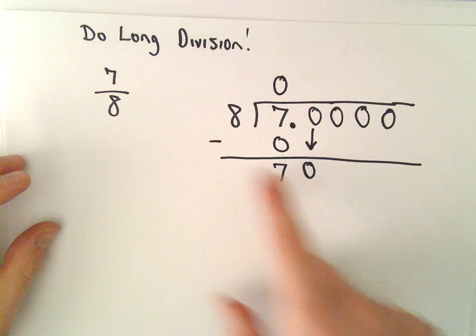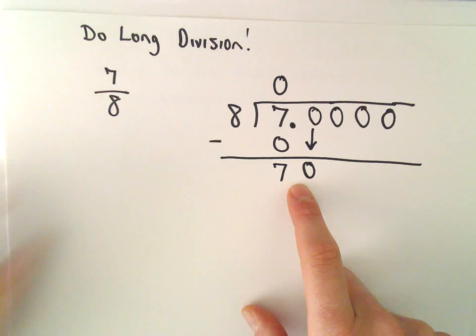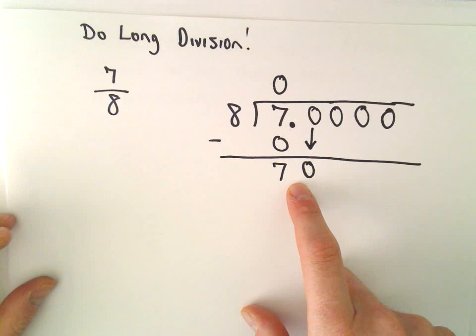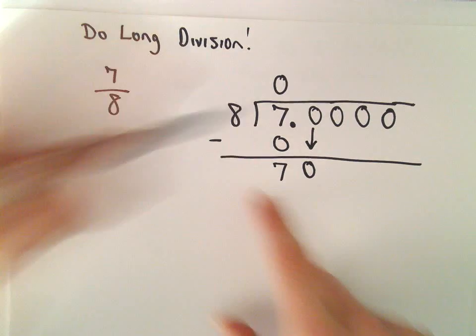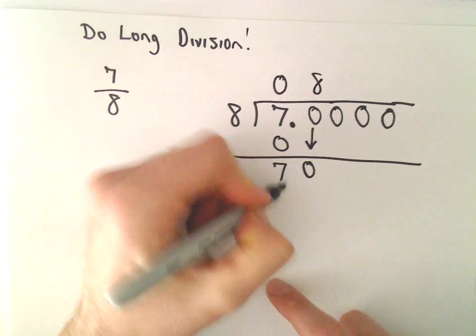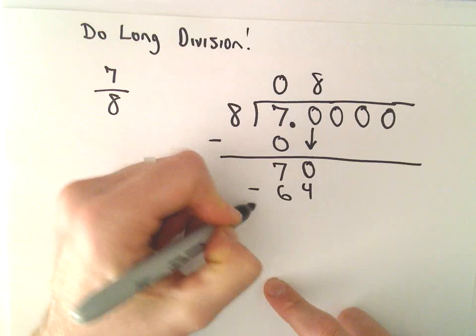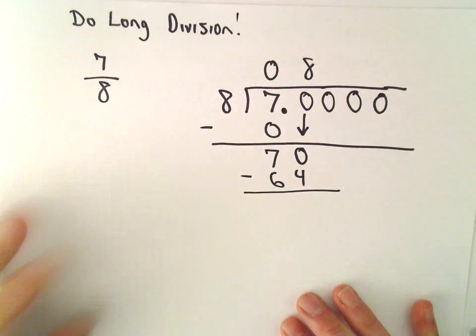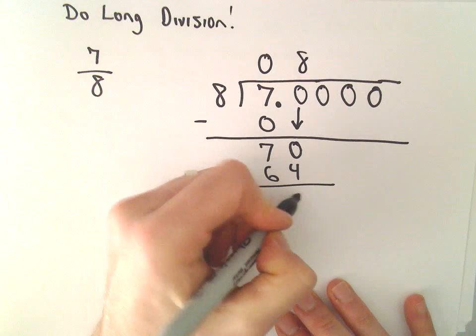So now, eight will go into seventy how many times without going over? Well, let's see. Eight times eight is sixty-four. I think that's going to work. And we just subtract: seventy minus sixty-four will leave us with six.